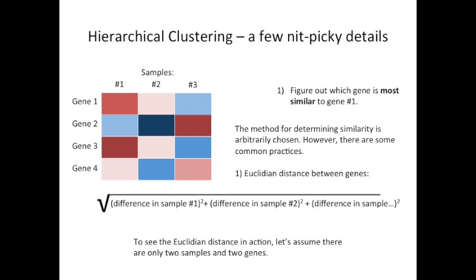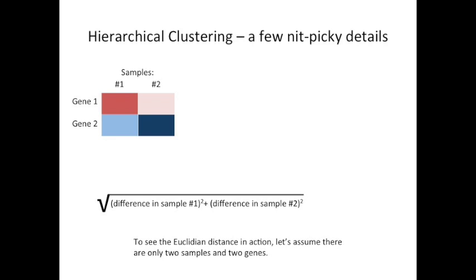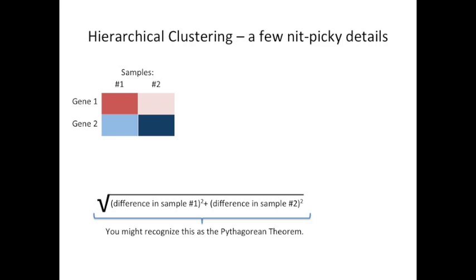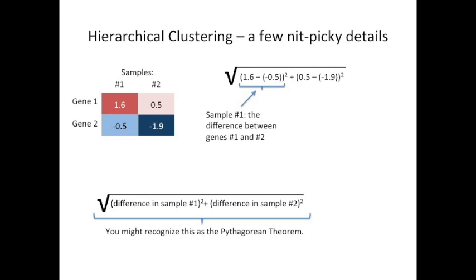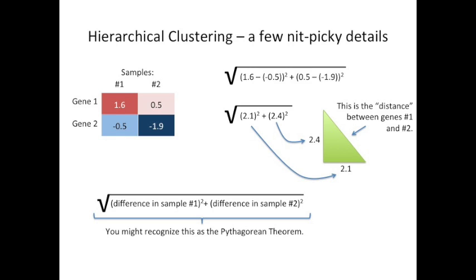To see the Euclidean distance in action, let's assume there are only two samples and two genes. When there are only two samples and two genes, the formula boils down to the Pythagorean theorem. Here we've drawn it out so that you can see how it's related to the Pythagorean theorem. We've put sample 1 on the x-axis and sample 2 on the y-axis. The hypotenuse is the distance between genes 1 and 2. So that's how the Euclidean method works.